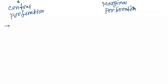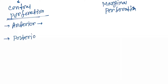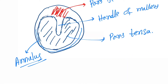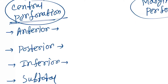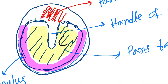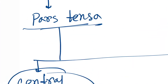Central perforation and marginal perforation — let's see in the diagram. Central perforation is in the central area of pars tensa, and marginal is the marginal area of pars tensa. Anterior central perforation is anterior to the handle of malleus and also central, so the perforation will look like this.